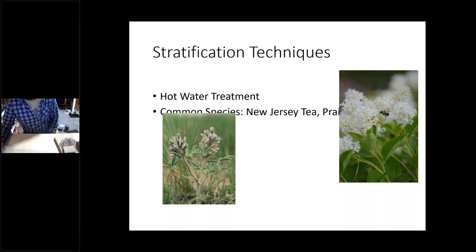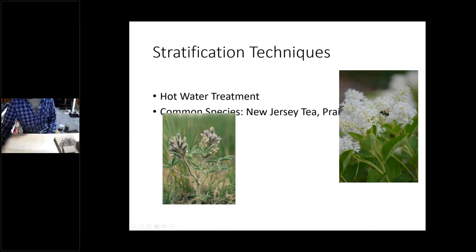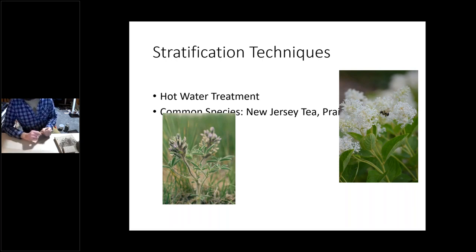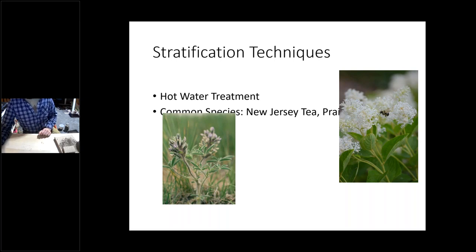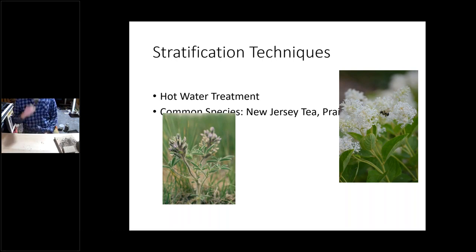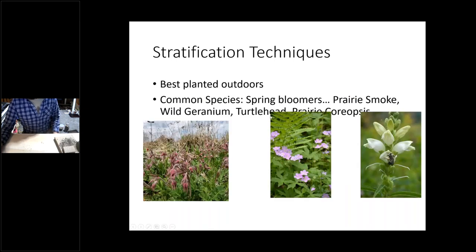Another technique is hot water treatment, which uses boiling water to scarify the seed as opposed to sandpaper. The two most common species I've come across that require it are New Jersey tea and prairie turnip. To do this, get a pot of water boiling, then have a glass jar or cup ready, put your seeds in the jar, pour the boiling water over them, and let it sit for the day. As the water cools down, the next day empty out the water. These species will then also require cold moist stratification, so mix with vermiculite, put in a bag, and refrigerate for however long the species needs.